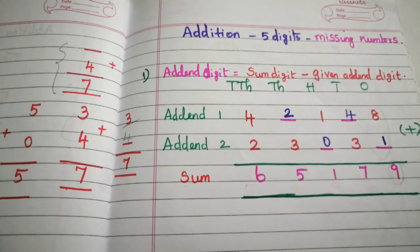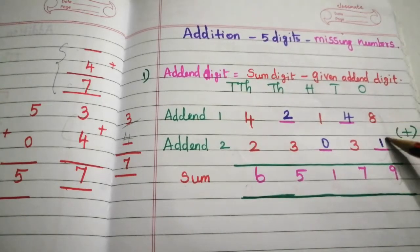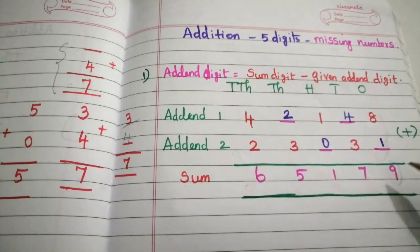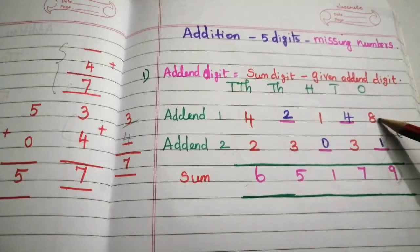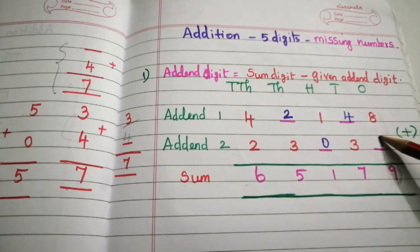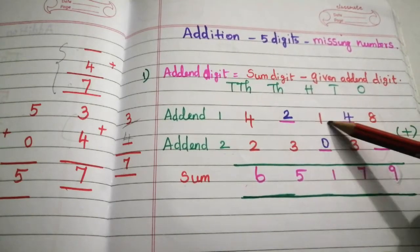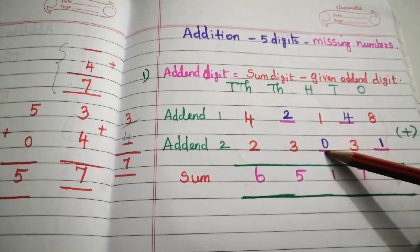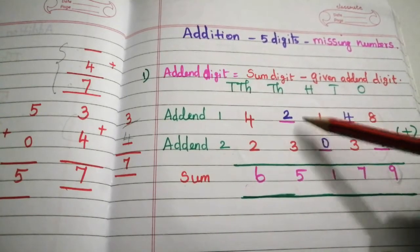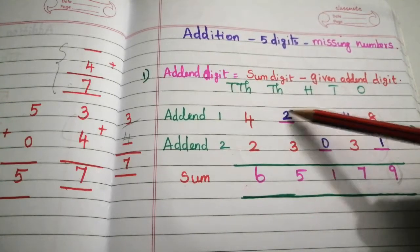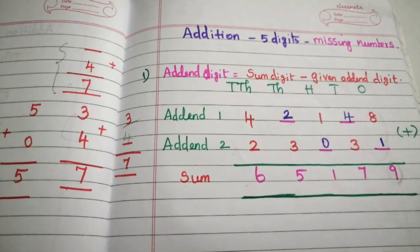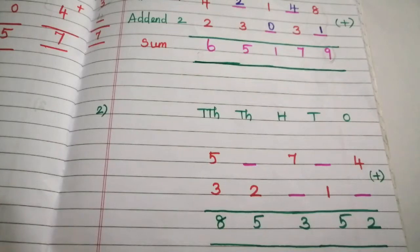Now we check whether our answer is correct. If we add the two addend digits, we should get the sum digit. 8 plus 1 is 9 — correct. 4 plus 3 is 7 — correct. 1 plus 0 is 1 — correct. 2 plus 3 is 5 — correct. Our answer is correct. Now we move to the second problem.